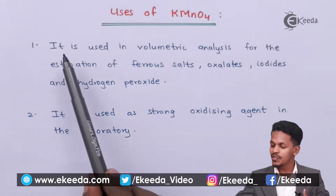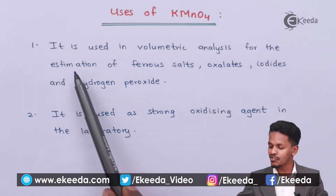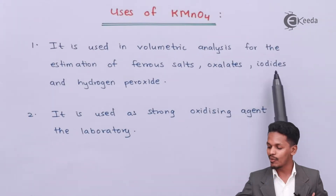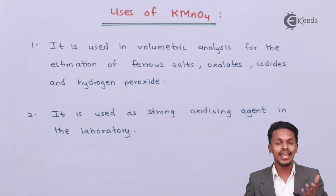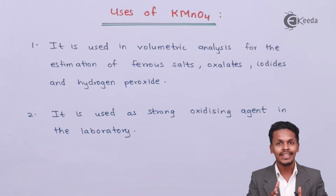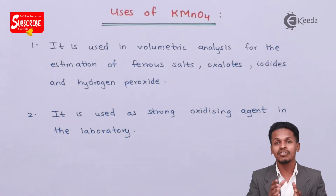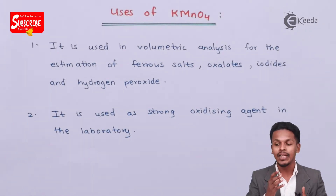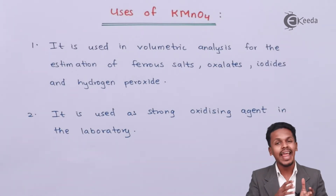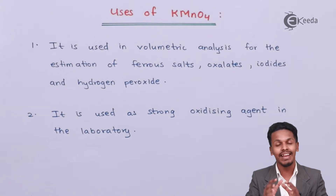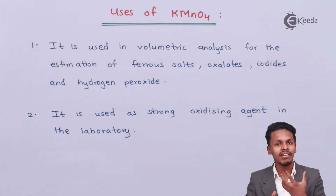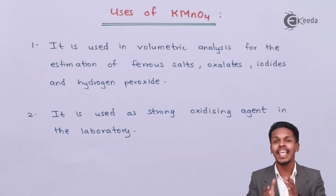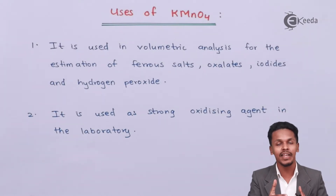Let us start with the first point: KMnO₄ is used in volumetric analysis for the estimation of ferrous salts, oxalates, iodides, and hydrogen peroxides. Since KMnO₄ is a very strong oxidizing agent, it can convert ferrous salt to ferric salt, and it can also convert oxalates and iodides. Because of this oxidation reaction, we can observe a color change, which is very helpful in volumetric analysis to determine the amount of substance participating in a particular reaction.